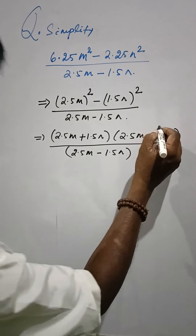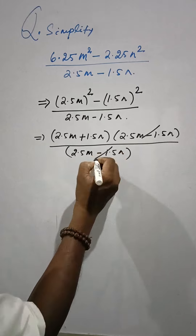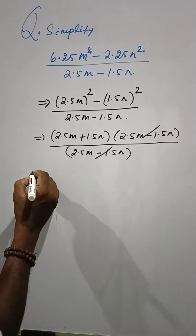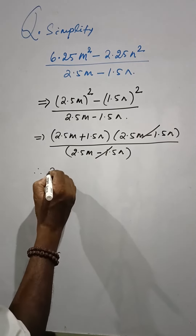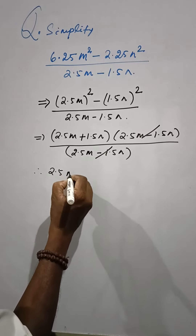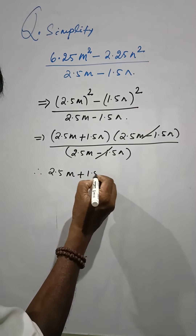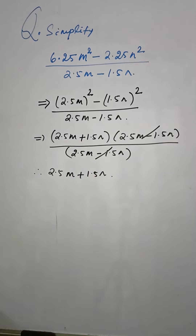Now this and this parts are cancelled. Therefore, the answer is 2.5m plus 1.5n.